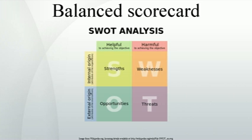The third-generation balanced scorecard refined the second generation to give the strategic objectives more relevance and functionality. The major difference is the incorporation of destination statements. Other key components consist of strategic objectives, strategic linkage model and perspectives, and measures and initiatives.